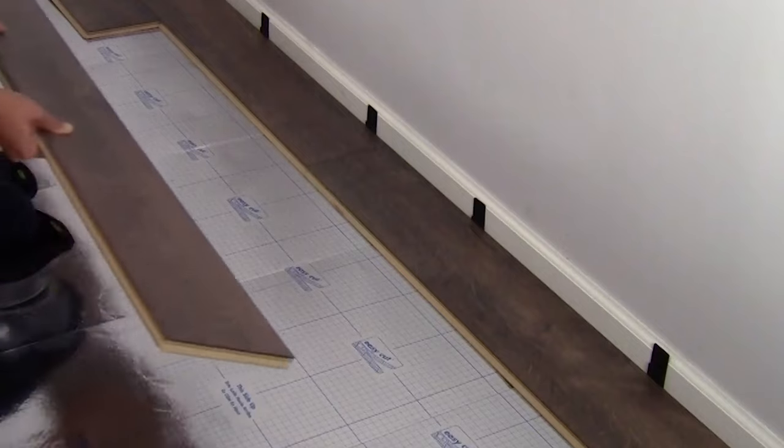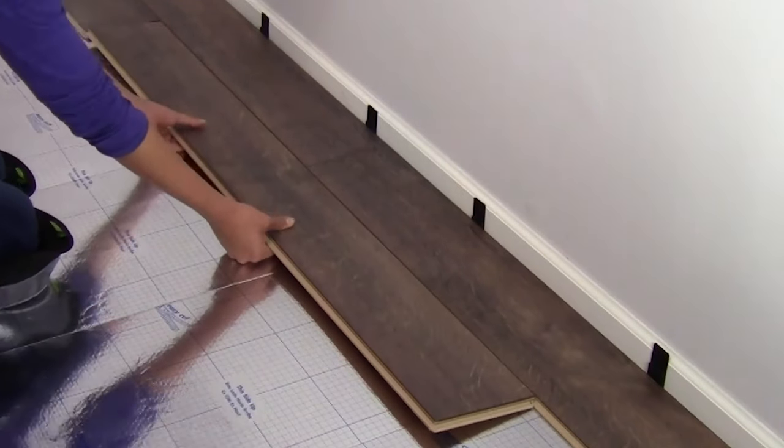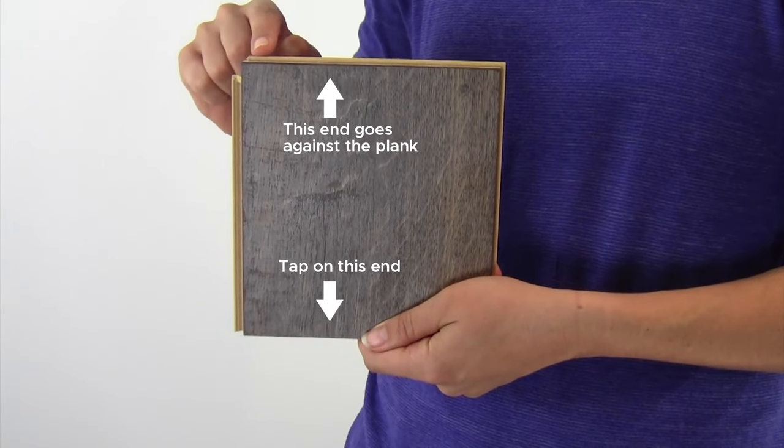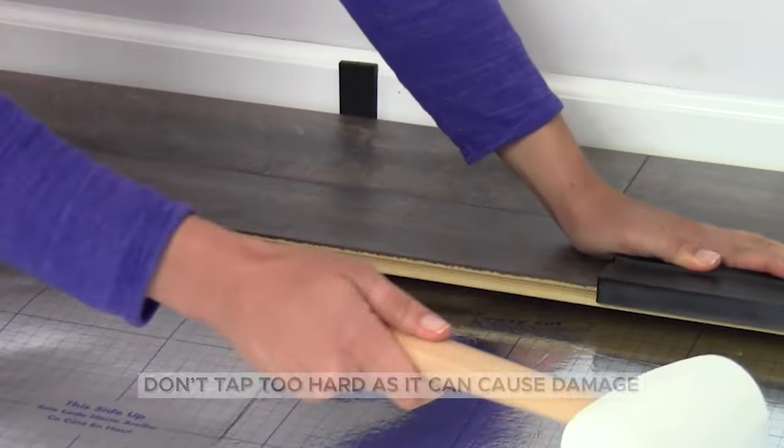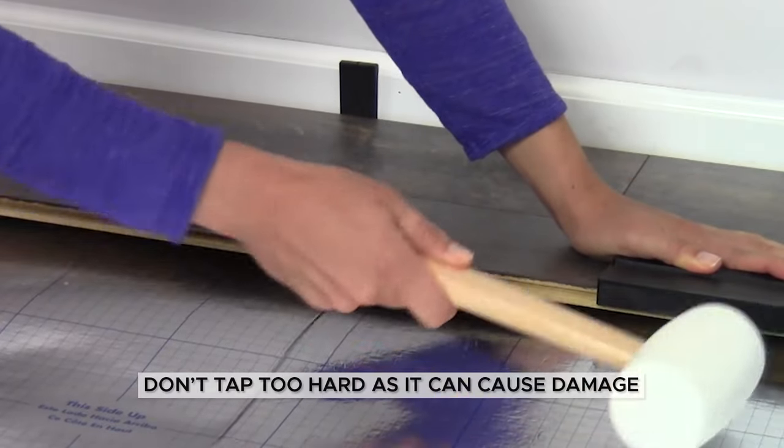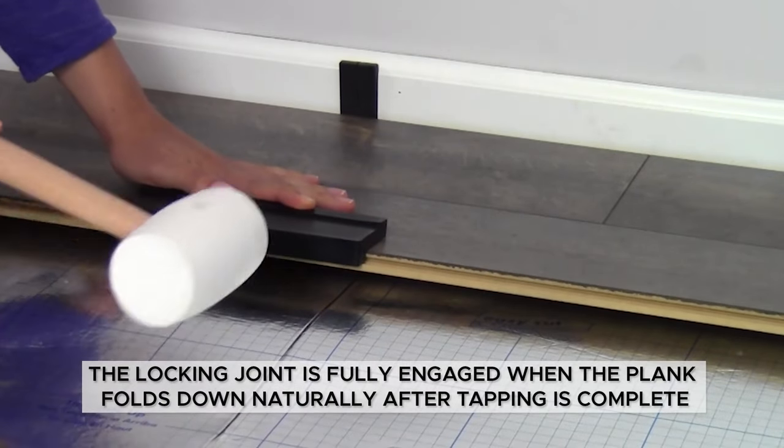Next, insert the long tongue side into the groove side at a 20 degree angle. Use a scrap piece of laminate with the short side protruding, or a tapping block to gently tap the plank in several places on the long side to ensure the locking joint is fully engaged.